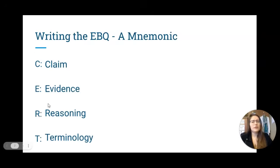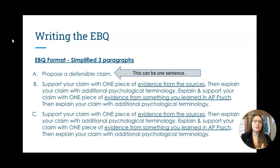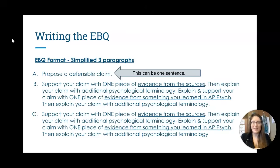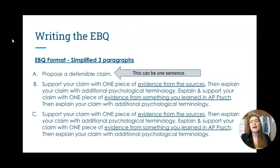When writing the EBQ, we have a mnemonic to help you remember: CERT — Claim, Evidence, Reasoning, Terminology. It's really more of a CERT-ERT because you do the ERT part two times. Part A can be a single sentence where you propose your claim. Part B is about three sentences: state the claim, explain it a bit, and tie it to one piece of evidence. Then repeat in Part C with a different piece of evidence. While this is a bit of an essay, it's not meant to be super long — most answers fit on about half a sheet of paper. Focus on quality rather than quantity.